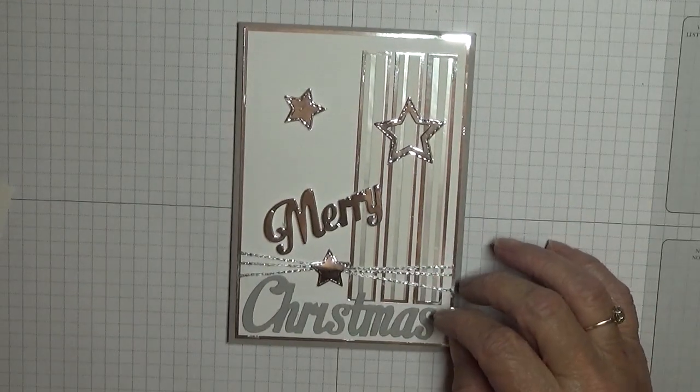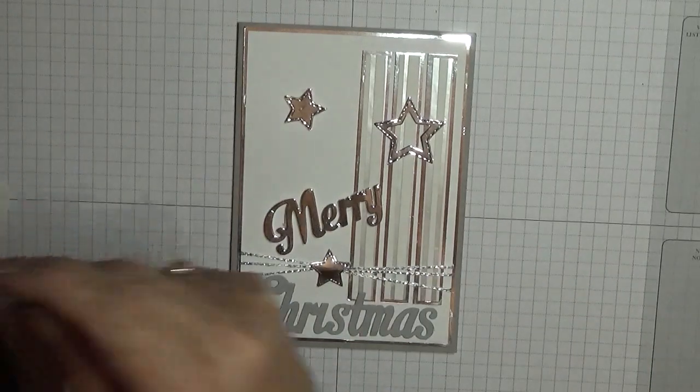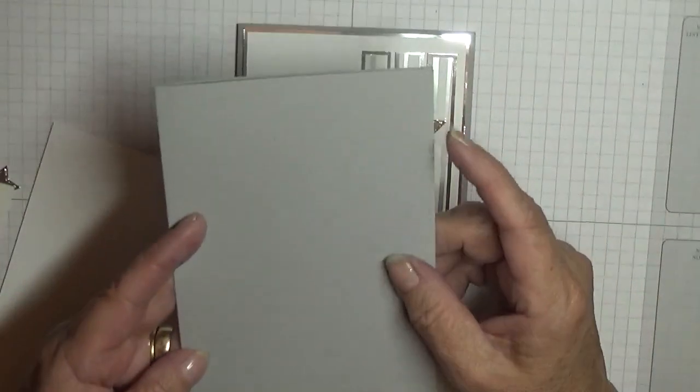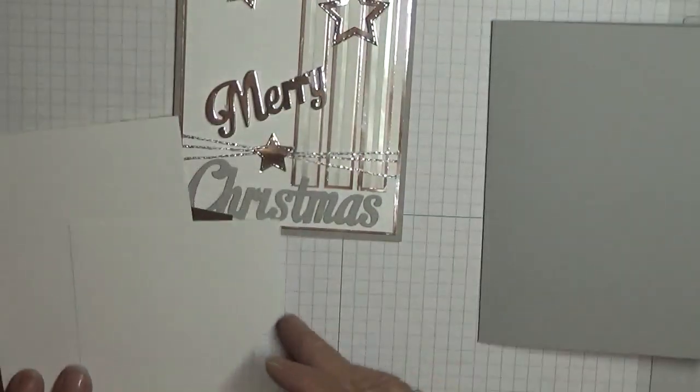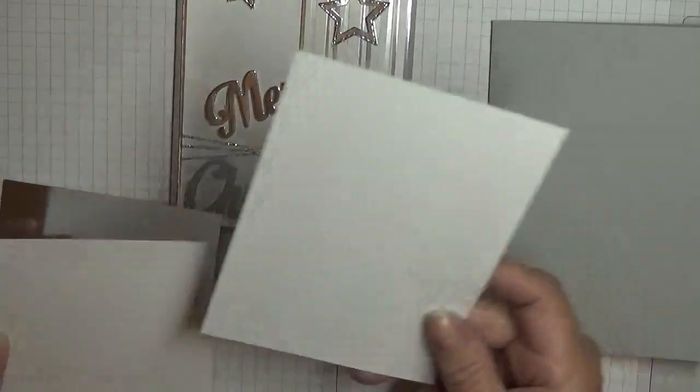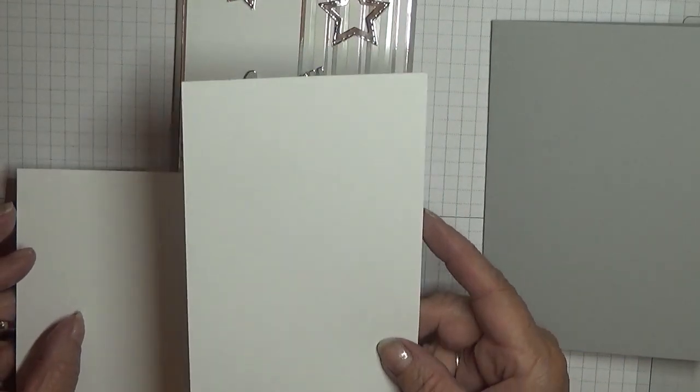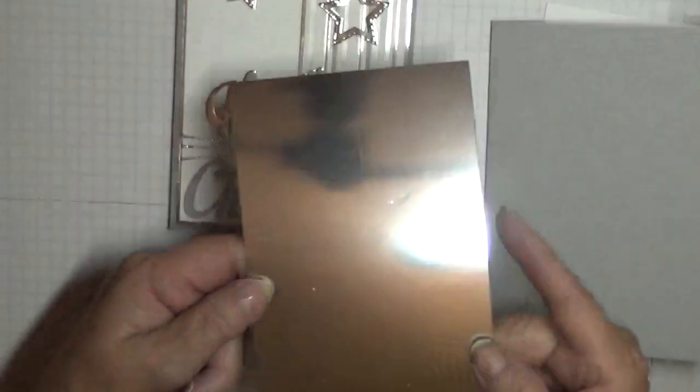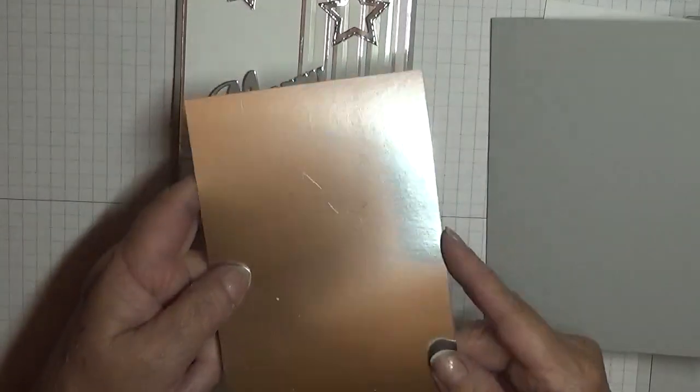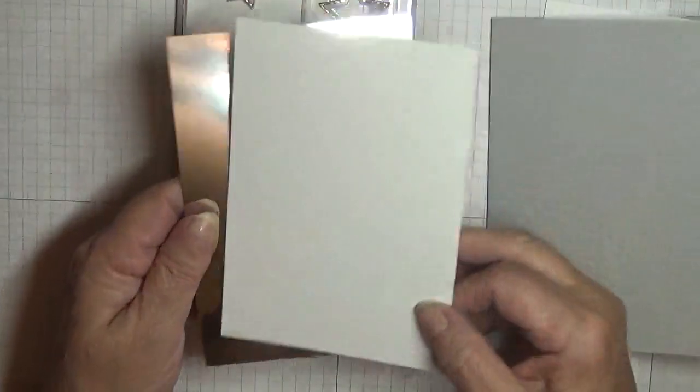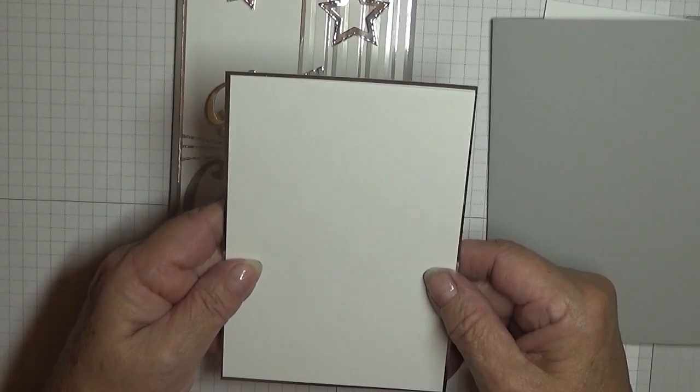To make this card I've used a smoky slate base of eight and a quarter by five and seven-eighths, scored at four and one-eighths and folded in half, a piece of white cardstock at five and five-eighths by three and seven-eighths for the inside, a piece of silver foil at five and five-eighths by three and seven-eighths and a piece of white card at five and a half by three and three-quarters.